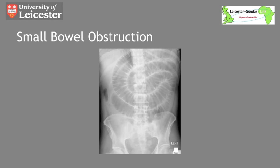This x-ray shows small bowel obstruction. The valvulae extend the whole way across the bowel, confirming that this is dilated small bowel, and there is no large bowel visible, which confirms this is a small bowel obstruction. Large bowel obstruction can also give dilated small bowel in the presence of an incompetent ileocecal valve that allows reflux of air backwards from the cecum into the small bowel. Large bowel obstruction without small bowel dilatation is at higher risk of perforation as it suggests a competent ileocecal valve and therefore is a closed loop with constantly increasing pressure.